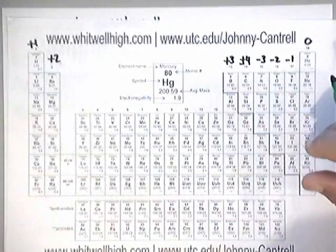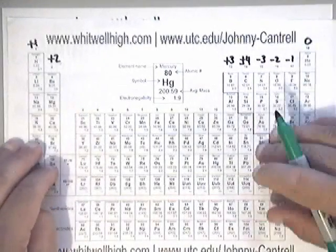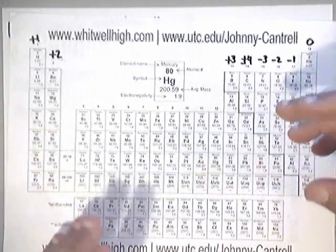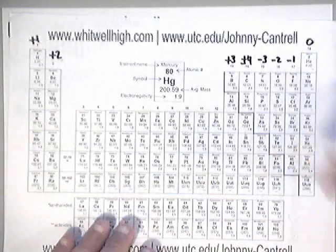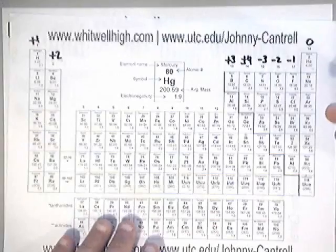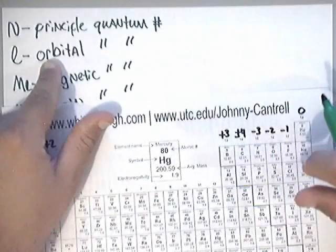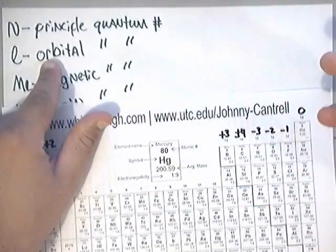The ones that we know that exist for sure are S, P, D, and F orbitals. After that, there are theoretic orbitals that can exist. So, meaning this, if you were looking at orbitals that are, say, the S orbital, it would have an L value of 0.